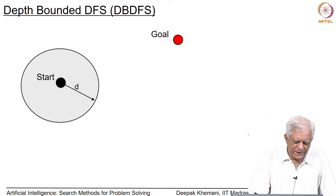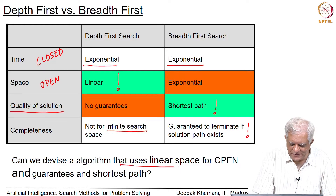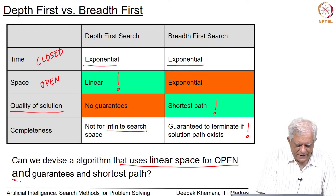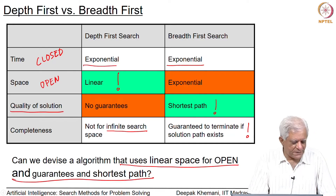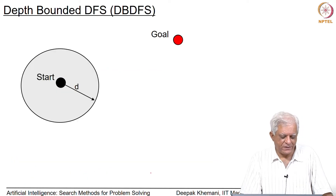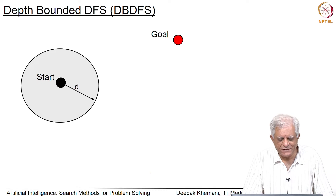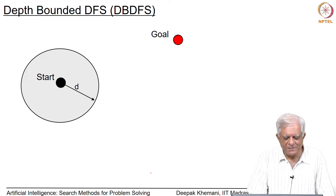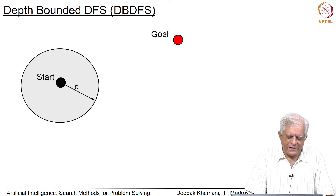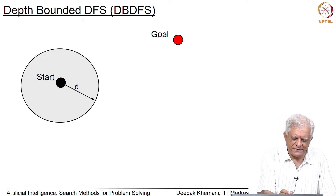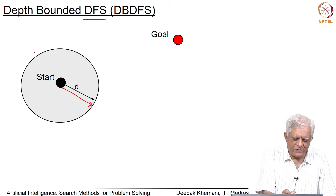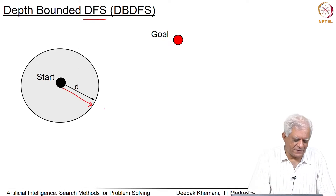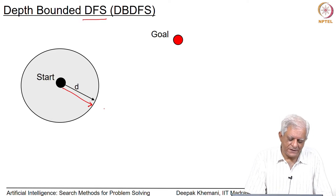Can we have an algorithm that uses linear space for open and which guarantees the shortest path? Luckily we have such an algorithm, but before we move to that algorithm, let us look at a simpler algorithm. This is called depth bounded depth first search. Essentially what we are doing is depth first search, but we have a depth bound as shown here. In some sense you have to stay within this circle, which is like a Laxman Rekha that the algorithm cannot go outside.